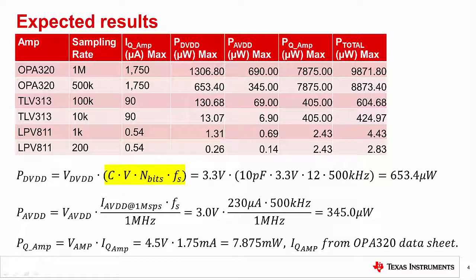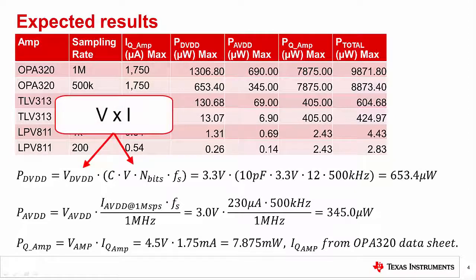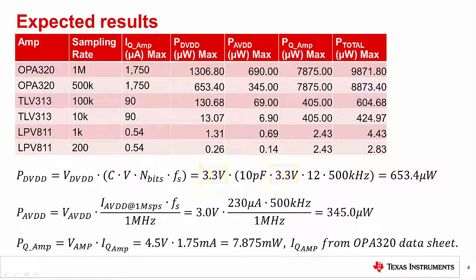The digital current is calculated as C times V times n_bits times Fs, where C is the digital output line capacitance, V is the digital signal level, n_bits is the number of ADC bits, and Fs is the sampling rate. This equation is really just the charge multiplied by the maximum number of transitions per second on the digital output line. Multiplying the current by V_dvdd converts to power. In this case, the supply is 3.3 V, the digital output bus capacitance is 10 pF, the number of bits is 12, and the sampling rate is 500 kS/s. The digital power equals 653.4 µW.